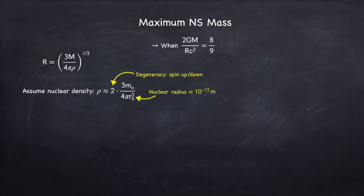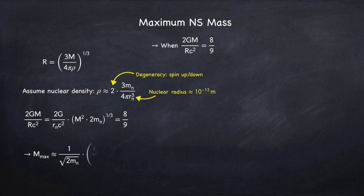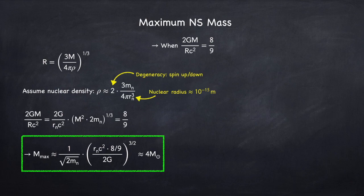In reality, this is an approximation, so this factor of two is not really that big of a deal. So now substituting this density into the radius, I get the following expression for the metric deviation, which I'm going to set to eight ninths when the star reaches its maximum mass. I can now solve for the mass to find that the maximum mass of a neutron star is approximately four solar masses.